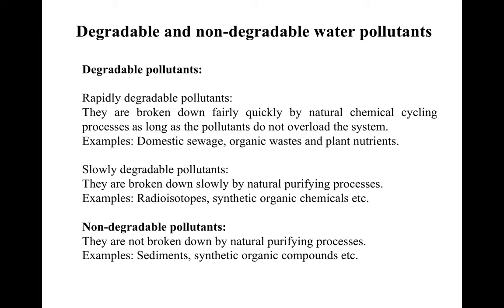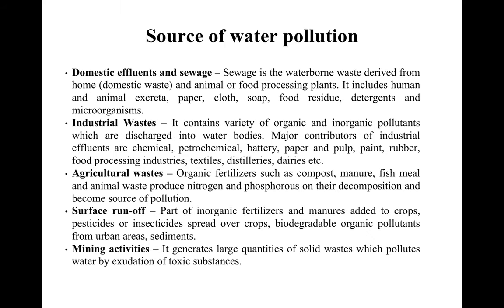Slowly degradable pollutants are broken down slowly by natural purifying processes. Examples include radioisotopes and synthetic organic chemicals like DDT, PCB, phenols, etc. Non-degradable pollutants are not broken down by natural purifying processes at all. These include sediments, synthetic organic compounds, viruses, bacteria, some metals, and some salts of metals.